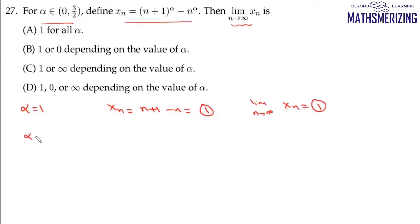When alpha is not equal to 1, we can write xn as n^alpha times (1 + 1/n)^alpha minus 1. This can be written as 1 + alpha/n + alpha(alpha-1)/2! times 1/n^2, and then minus 1. The 1 and -1 cancel.